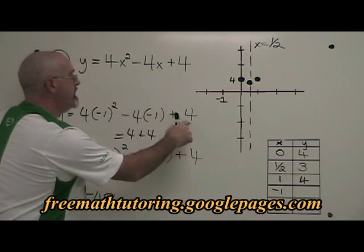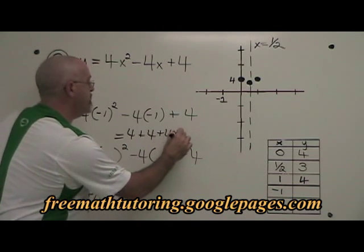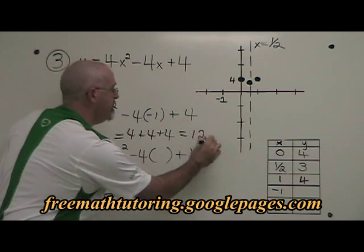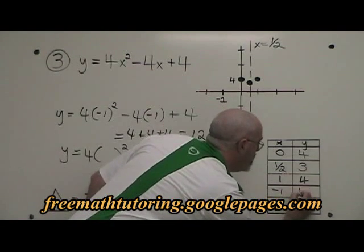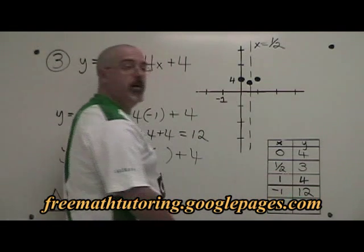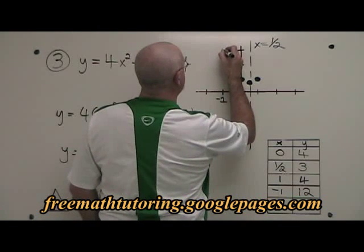And then I add this 4 at the end of the equation. 4 plus 4 plus 4 equals 12 and I have the point negative 1, 12 in my table and on my graph.